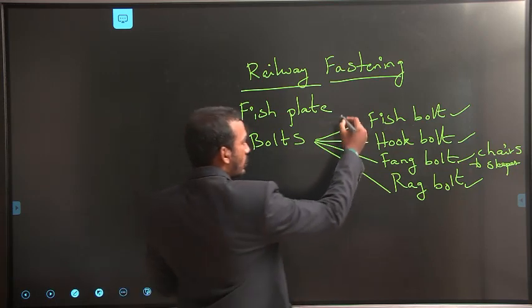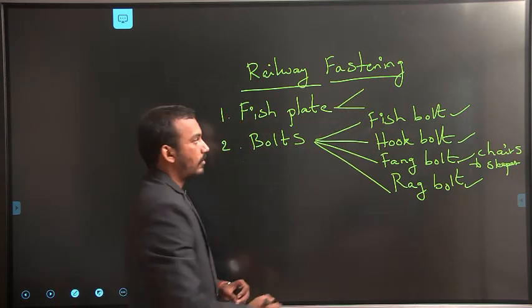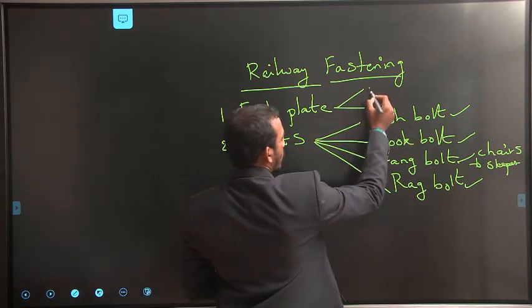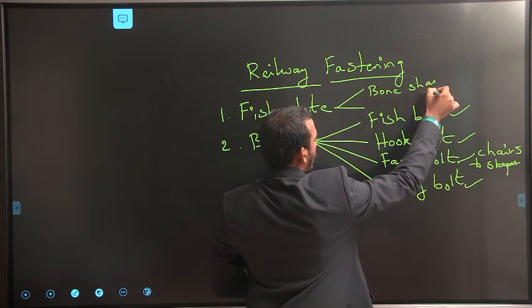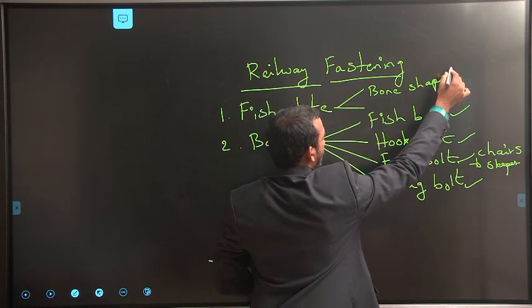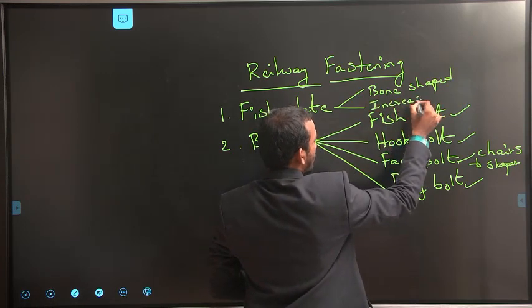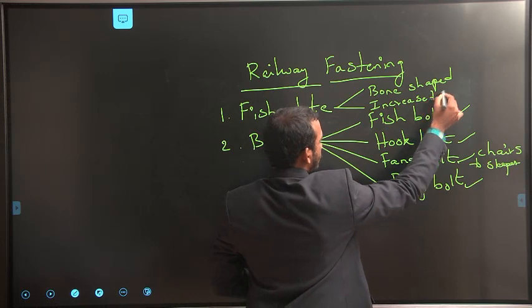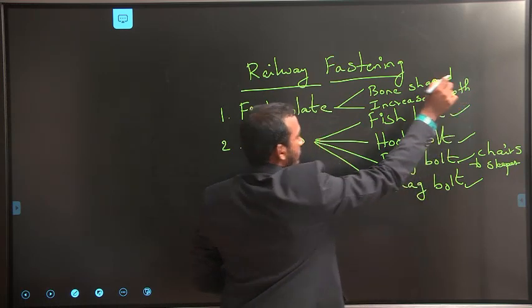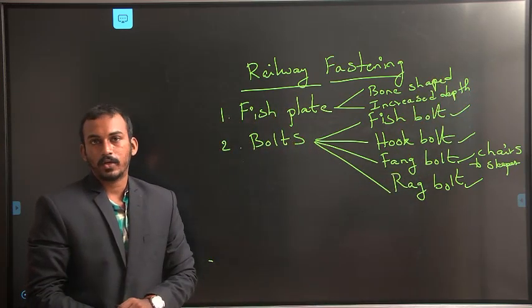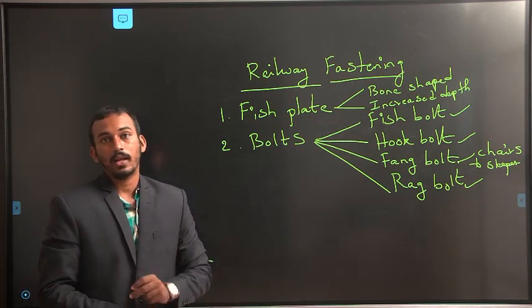Similarly, fish bolts are also classified into two types. The first one is bone-shaped fish bolt, and the second one is increased depth fish plate. These are the two types of fish plates available. These two topics we already completed in our last class.